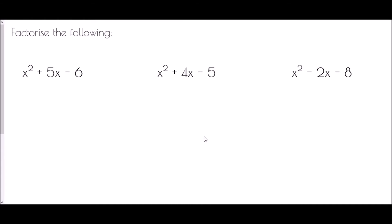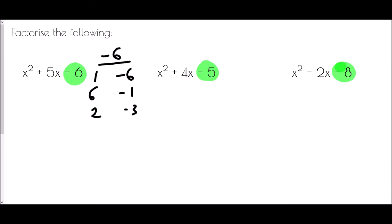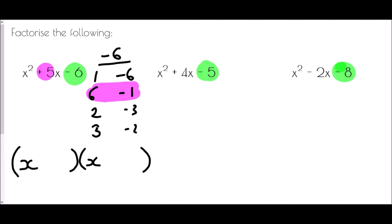In the next set of questions we have some negative values — specifically negative values at the end, in what we've called c. We have to be very careful when making our factor pairs to get every different sign combination. To make negative six: it could be one times negative six, or six times negative one, or two times negative three, or three times negative two. Which pair adds to make positive five? Six minus one gives positive five, so our brackets are x plus six and x minus one.